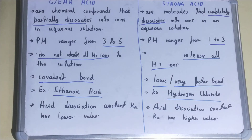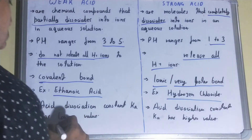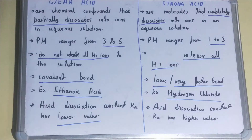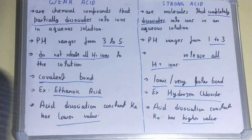Finally, regarding the acid dissociation constant (Ka): for weak acids it has a lower value, whereas for strong acids it has a higher value. This covers the main differences between weak acids and strong acids.